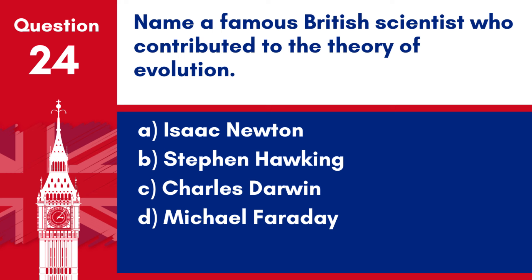Question 26. When did the English Civil War occur? a. 1215–1217. b. 1642–1651. c. 1707–1708. d. 1815–1816.